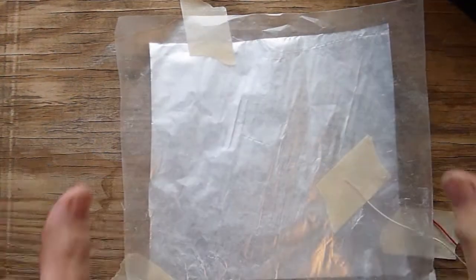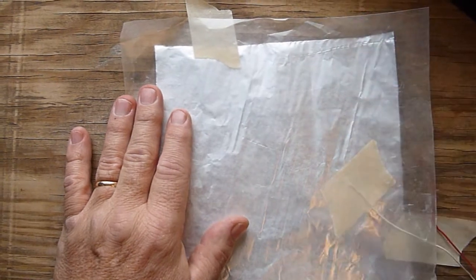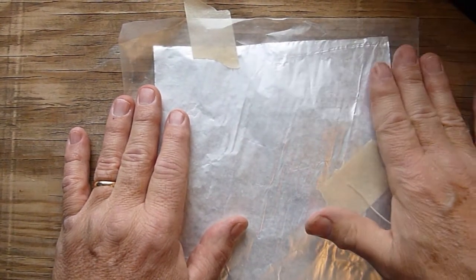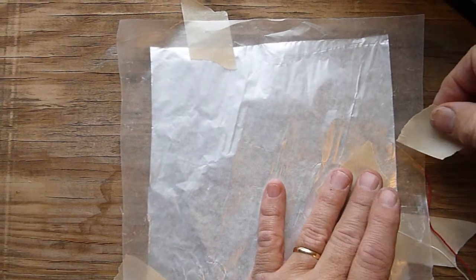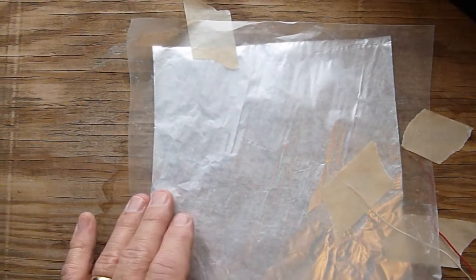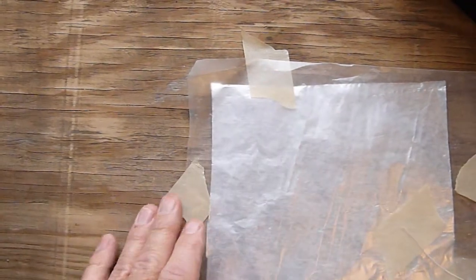Then we need to add wax paper, common wax paper. This will be our capacitors dielectric, which is just a thin insulating layer. We want to tape that down as well.